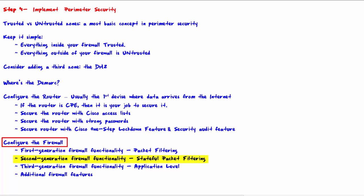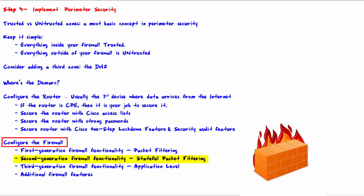Second-generation firewall functionality is stateful packet filtering. This occurs at layers one, two, three, and four of the OSI reference model. The addition of layer four — the transport layer — allows the use of connection state. The firewall records all connections passing through it and determines if any packet is part of an existing connection, the start of a new connection, or not part of any connection at all.